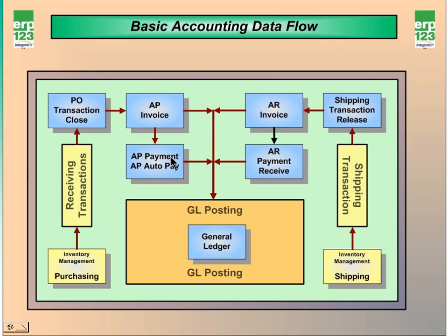You can pay invoices using the AP payment, which is an individual check one at a time, or the AP auto payment module, which is a check run. This also creates transactions that go to the general ledger. On the accounts receivable side, we start with shipping transactions from your sales orders. Shipping transactions are created using the shipping module, and the shipping transaction release module is where all shipping transactions are being accrued prior to AR invoicing. AR invoices can be created either using the AR invoice module or the invoice generator, which will create multiple invoices simultaneously. You can manage the invoices within the AR invoice module, adding freight and miscellaneous charges, and once you save it, transactions will be created that will go to the general ledger.